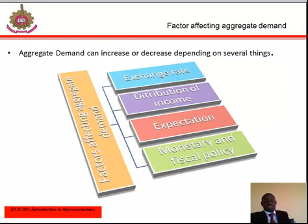Factors affecting aggregate demand. Aggregate demand can increase or decrease depending on several factors, which are exchange rates, distribution of income, expectations, and monetary and fiscal policy. Regarding exchange rates: when a country's exchange rate increases, net exports will decrease and aggregate expenditure will go down at all price levels. This means that aggregate demand may decrease.